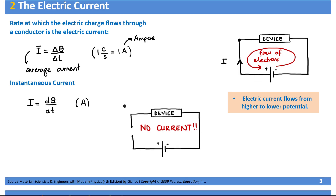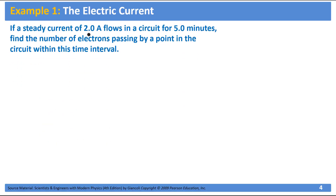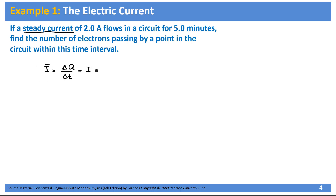Now let's solve a very simple example and move to resistance. In this example, it is told that a steady current — steady current means a constant current — of two amperes is flowing in a circuit for five minutes. It's asking us to determine the number of electrons passing by a point within the circuit in this time interval. In order to determine the number of electrons, I need to first find out how much charge passes through a given point, using the definition of electric current.